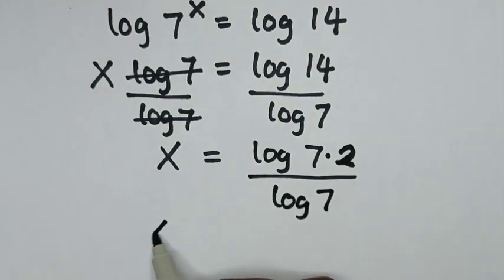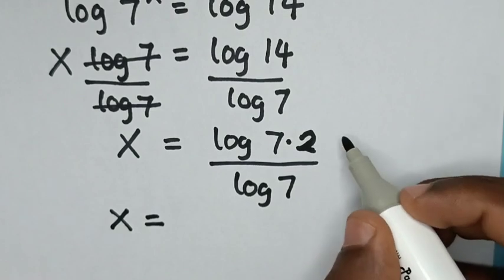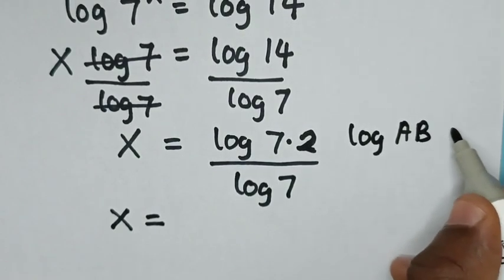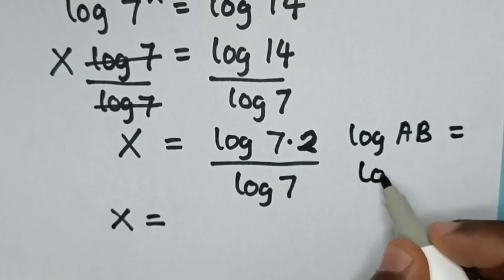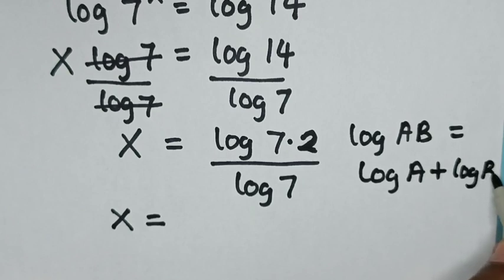Then x will be equal to - from here, log of 7 times 2 - we'll apply the rule that log of AB equals log A plus log B.